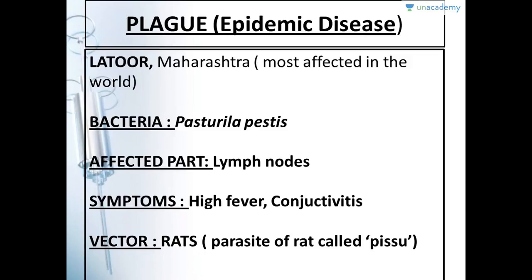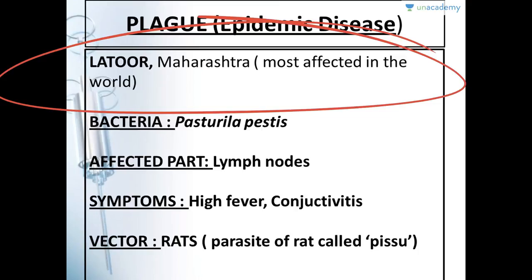Plague is an epidemic and contagious disease that spreads at a really fast rate. Latur in Maharashtra was very badly affected by this disease once, in the early to mid 1980s. It was a complete epidemic and the government extended its support to curb the menace.